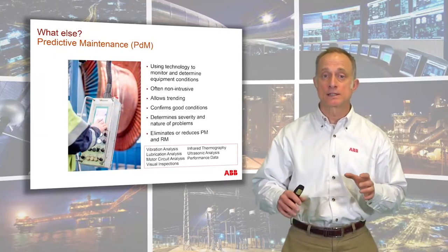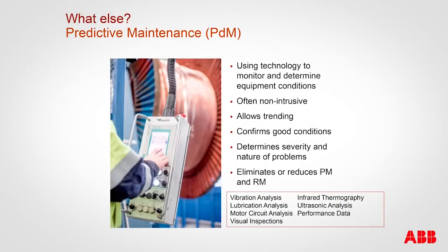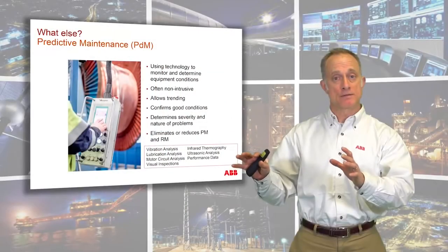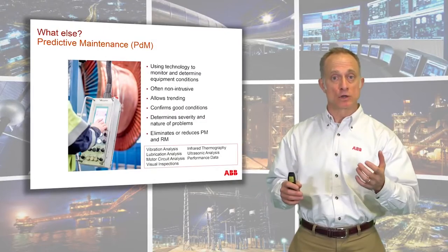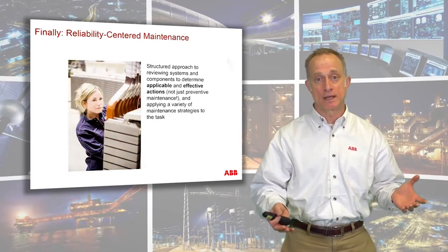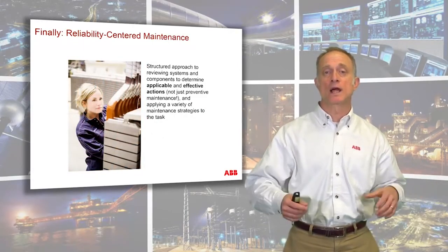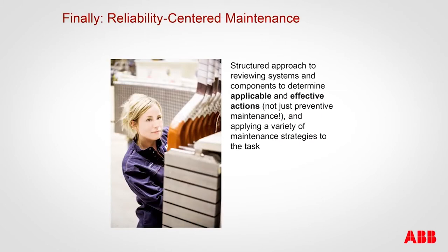Predictive maintenance uses a variety of technologies such as infrared thermography or lubrication analysis to assess equipment even while it's in operation, detecting things we can't see with the naked eye that alert us something needs to be addressed. Finally, reliability-centered maintenance takes advantage of all of those approaches and only chooses the right approach for the right piece of equipment.